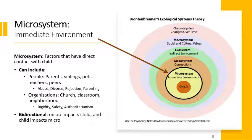Within the microsystem, things that can go wrong include abuse — if parents are abusive or neglectful, that would be a pretty serious impact. If divorce occurs, the divorce itself might not be a direct engagement with the child, but the fact of it happening in that immediate microsystem environment can still impact the child. Peer rejection is a microsystem factor — this is a direct interaction with a child or adolescent. Parenting style also falls here.